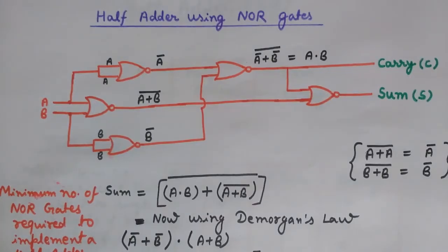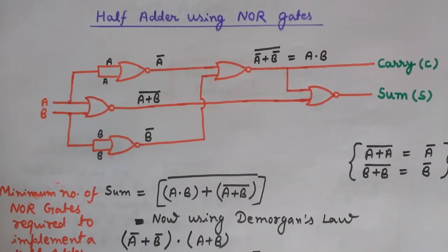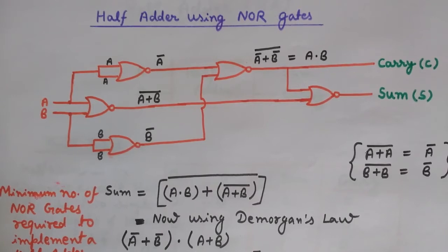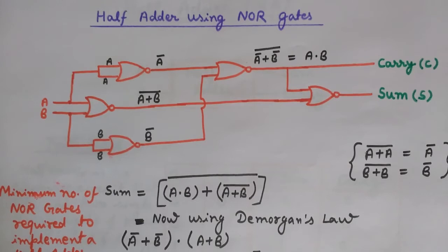Hi friends, welcome back to Engineering Made Easy. I'm Lalithu. Today we will discuss the half adder using NOR gates. Here we will use NOR gates only to implement a half adder. In the last lecture we saw how to implement a half adder using only NAND gates. As we know, NAND gate and NOR gate are the universal gates, so we can create any circuit using either NOR gates or NAND gates only.